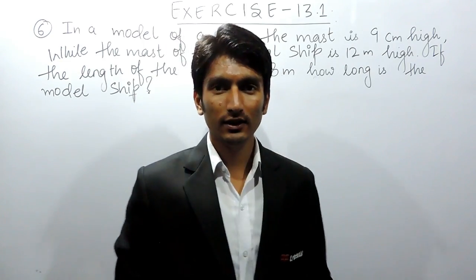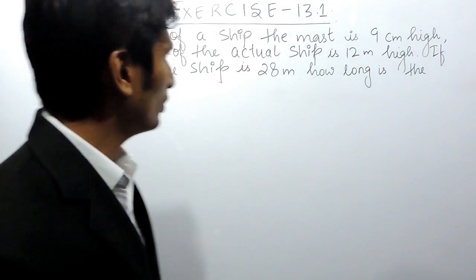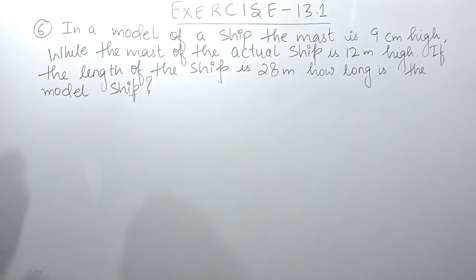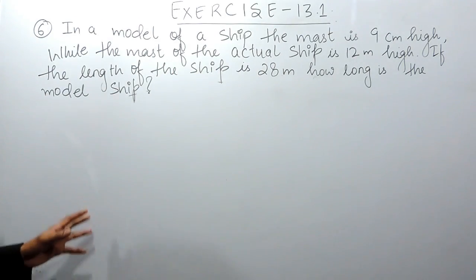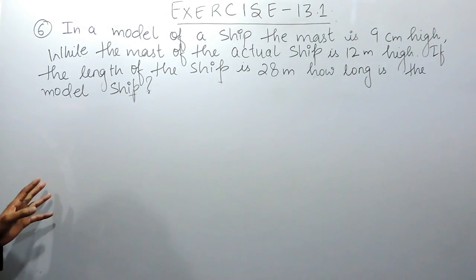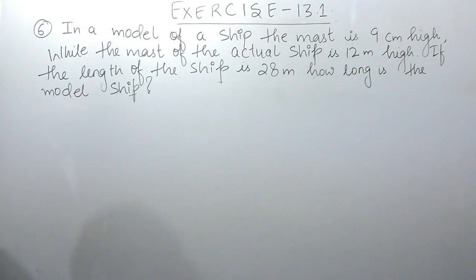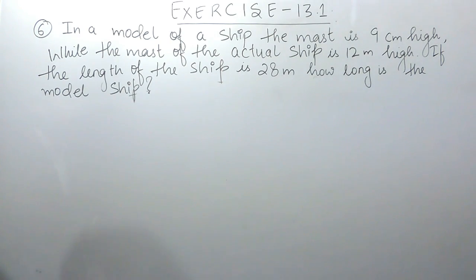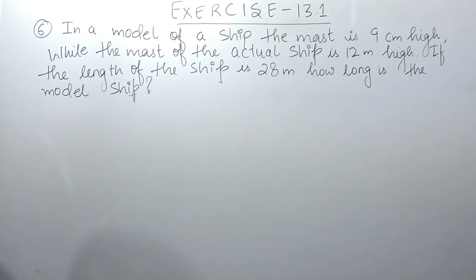Hello everyone. In this video we are going to solve question number six of Exercise 13.1. The question says: in a model of a ship, the mast is 9 centimeters high, while the mast of the actual ship is 12 meters high. If the length of the ship is 28 meters, you have to find how long is the model ship.